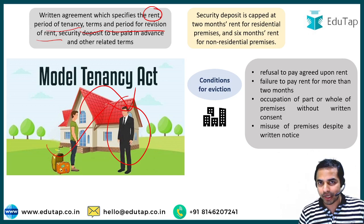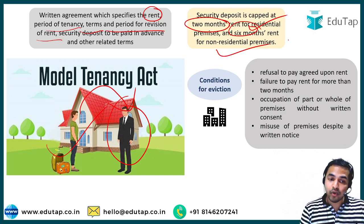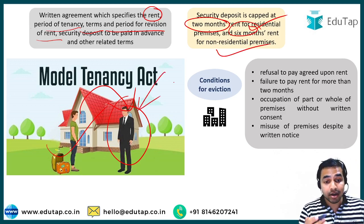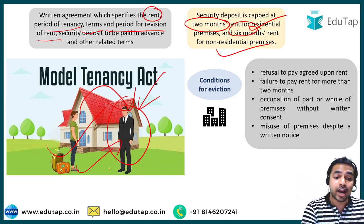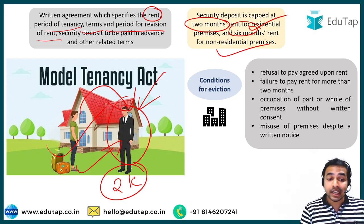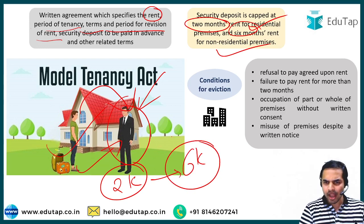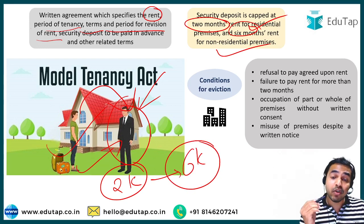The security deposit amount has been kept at two months' rent for residential premises and six months' rent for non-residential premises. For example, if the rent of a residential premises is ₹1,000, then the tenant is required to pay ₹2,000 as the security deposit. For a non-residential premises, this security deposit amount would increase to ₹6,000.